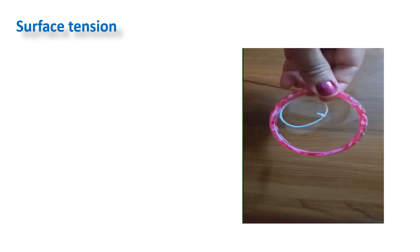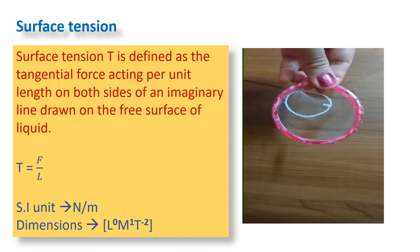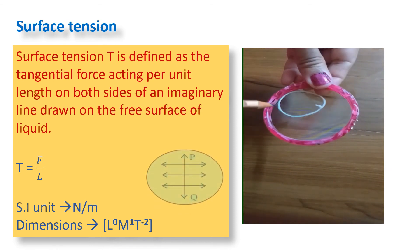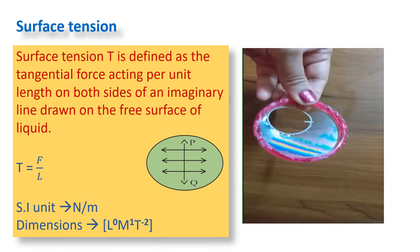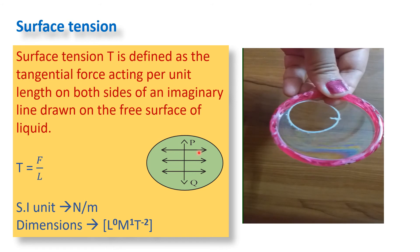Surface tension T is defined as the tangential force acting per unit length on both sides of an imaginary line drawn on the free surface of a liquid. On either side of this imaginary line, forces act that are equal in magnitude and opposite in direction, tangential to the surface. The force per unit length acting on this line is called the force of surface tension, T.